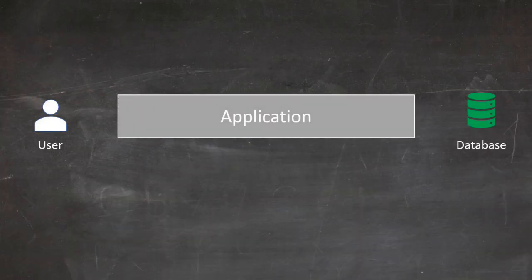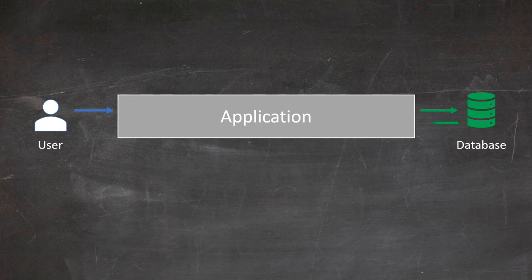Let's kick off this second microservice tutorial with basics — the very basics of an application, where a user interacts with a monolithic application to get data from a database so they could make an informed decision. The user takes an action, the application retrieves the appropriate data and presents them to the user. Well, today, this monolithic design no longer works because of the connected nature of our world.